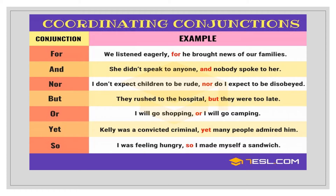For example: 'I don't expect children to be rude, nor do I expect them to be disobedient.' You use 'nor' for negative sentences — both parts of the sentence are negative and you put them in one sentence using 'nor'. Then we have 'but': 'They rushed to the hospital, but they were too late.' You use 'but' when you have two contrasting ideas.